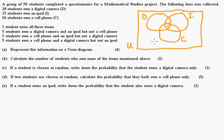Now it says five students own a digital camera and an iPod, so digital camera and iPod is going to be five right there. And then it says two students own a cell phone and an iPod but not a digital camera, so cell phone and iPod, that's going to be two right there. And then the last one, three students own a cell phone and a digital camera. Well that's going to be a three right there.